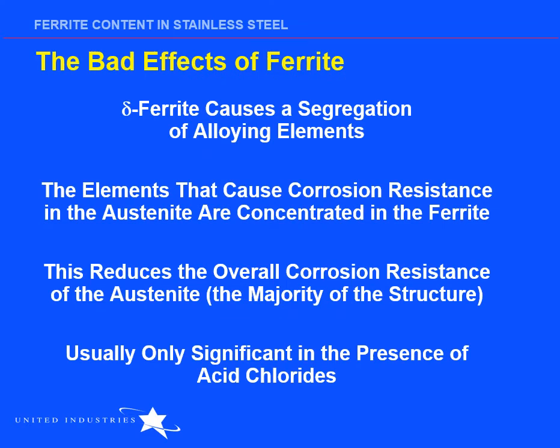On the negative side, delta ferrite is partially responsible for alloy segregation, meaning that there is not a homogeneous distribution of the elements that provide good corrosion resistance properties. Chromium, carbon, molybdenum, and to a lesser extent nickel are absorbed by delta ferrite and are not available to help form the passive layer that protects stainless steel from corrosive attack. This diminished corrosion resistance is particularly noticeable in service environments of low pH or acidic halide compounds — usually chlorides — which may be found in CIP or SIP solutions, or in process chemistries or buffers used in the pharmaceutical and food processing industries.